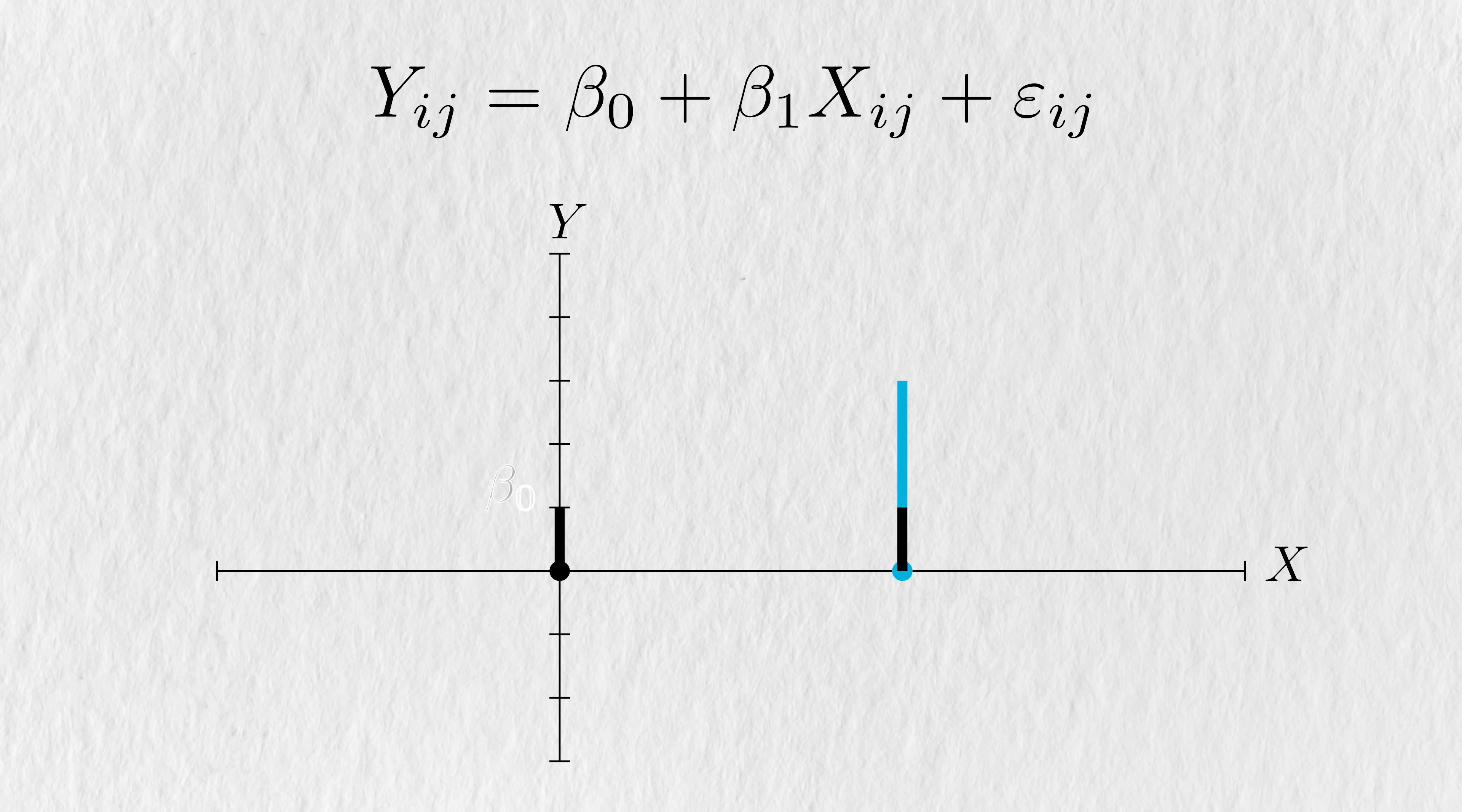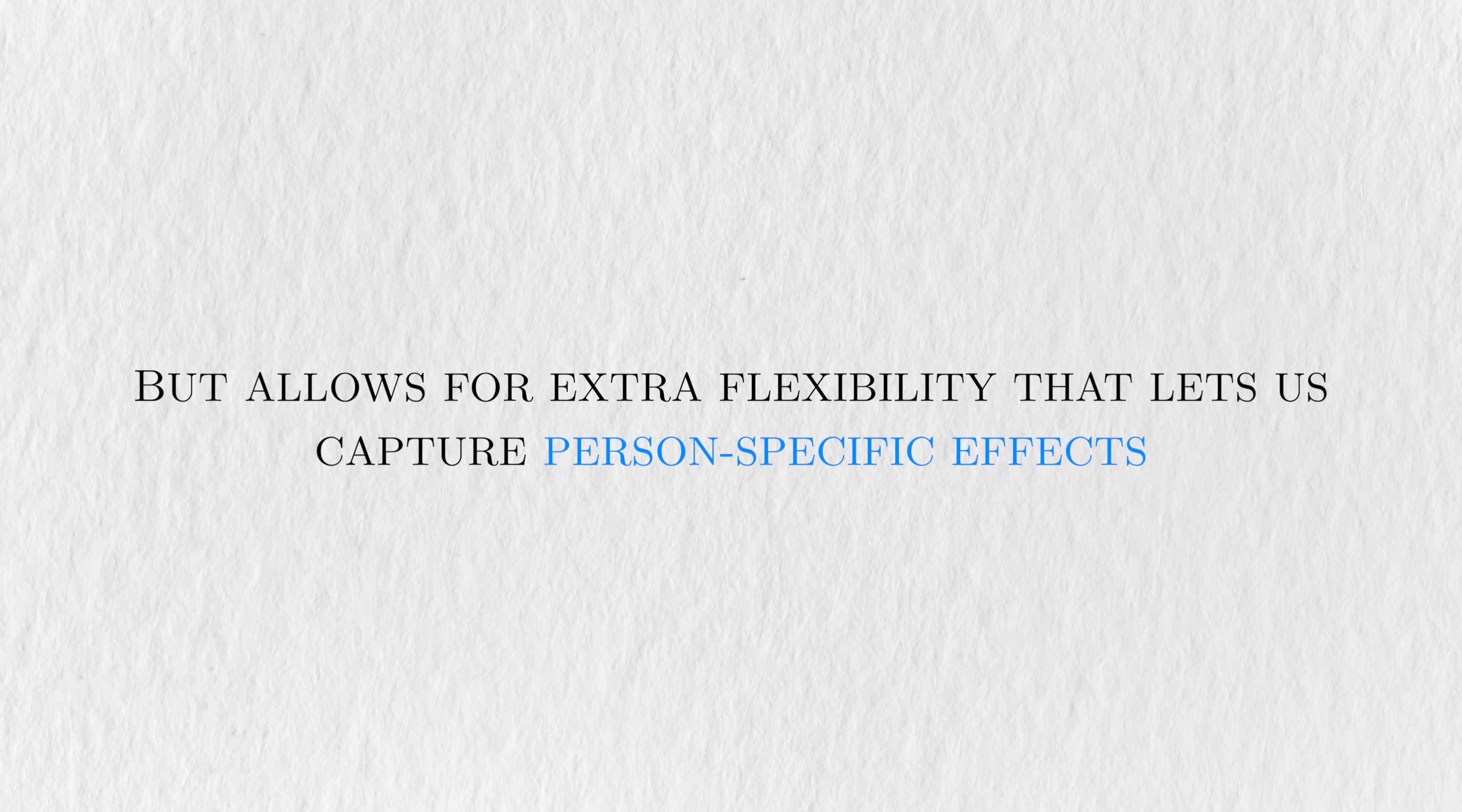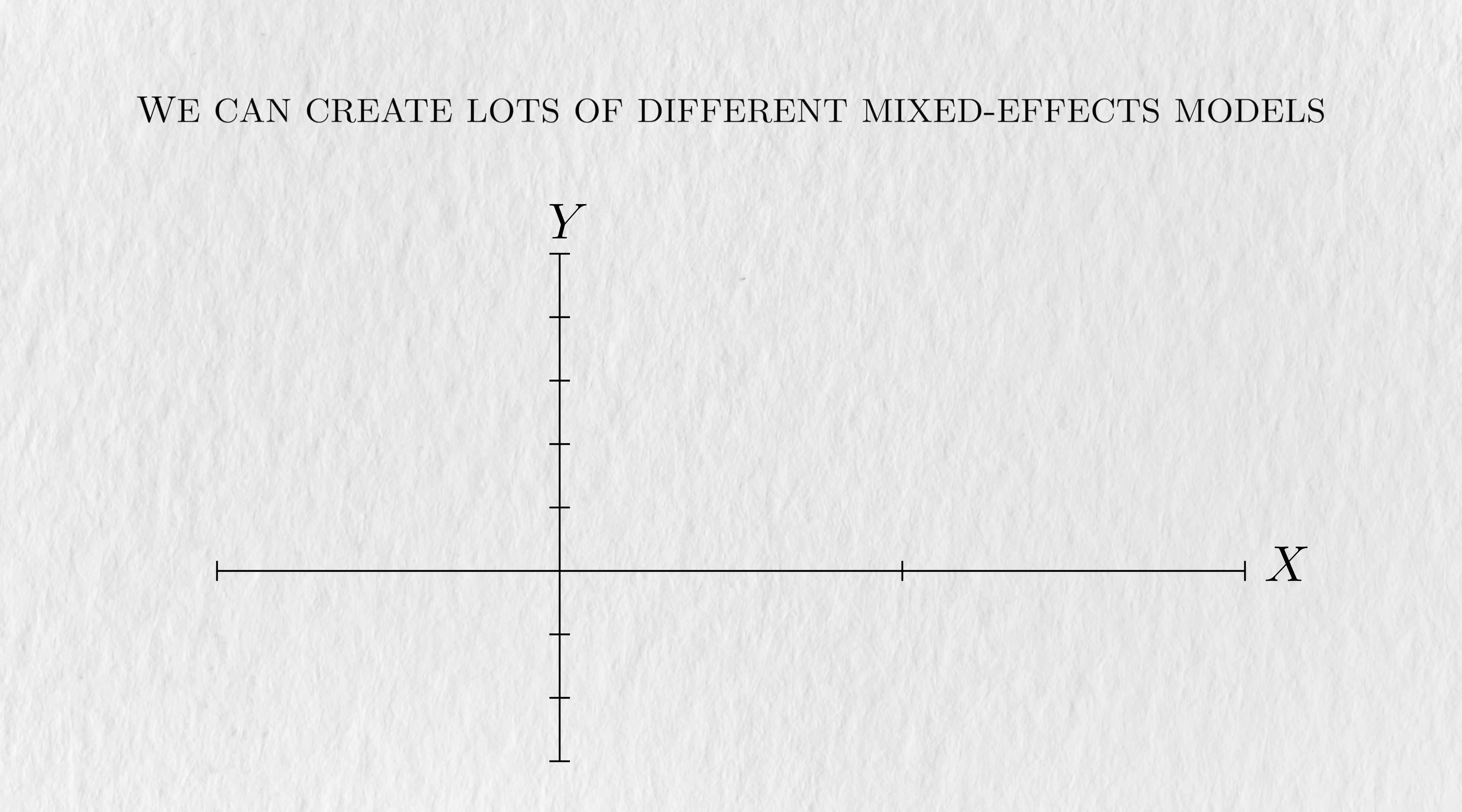Under the linear regression model, beta1 captures the treatment effect for this population as a whole. We can give a similar population level interpretation to beta0. The mixed effects model has a similar structure to the linear regression model, but allows for extra flexibility that lets us capture person-specific effects. We can create lots of different mixed effects models, but we'll focus on two simple cases, since they're the most commonly used ones we'd see.